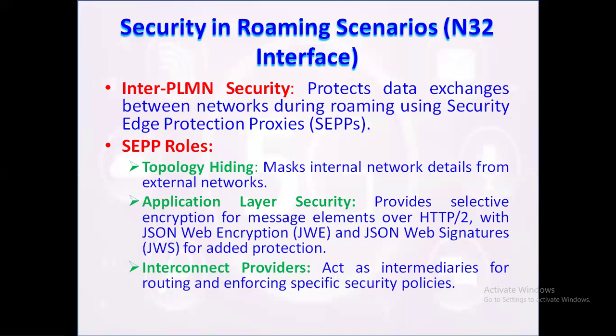Communication between SEPPs uses application layer security where JSON web encryption (JWE) is employed for encrypting and signing specific message elements. This selective encryption lets intermediaries inspect certain message parts while other parts remain encrypted for security. For instances with no intermediaries, TLS can be used for end-to-end encryption, providing a more straightforward protection mechanism when external inspection is unnecessary.